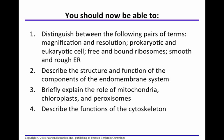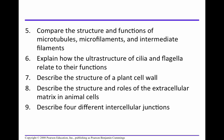At the end of Chapter 6, you should be able to distinguish between magnification, resolution, prokaryotic and eukaryotic cells, free and bound ribosomes, smooth and rough ER. Describe the structure and function of the endomembrane system. Briefly explain the role of mitochondria, chloroplasts, and peroxisomes. Describe the functions of the cytoskeleton. Compare and contrast microtubules, microfilaments, and intermediate filaments. Explain how the ultrastructure of cilia and flagella relate to their function. Describe the structure of a plant cell wall and how it differs from the extracellular matrix of an animal cell. Describe the structure and role of the ECM in animal cells.